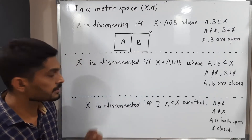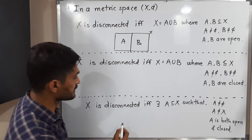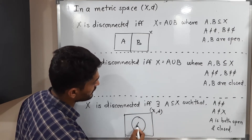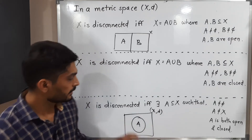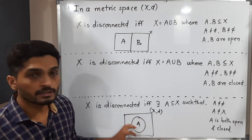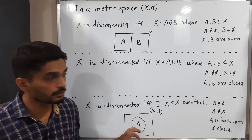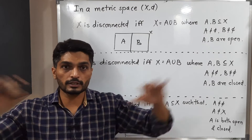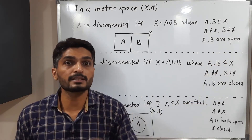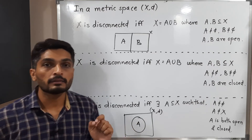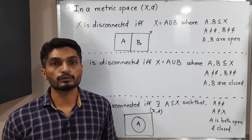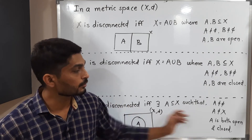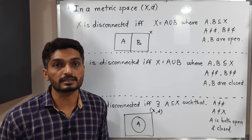The last equivalent definition is a little different. A metric space X is disconnected if it is possible to find a single set A which is a subset of X, not equal to phi, and not equal to X itself — that is, it is a proper non-empty subset — such that A is simultaneously both open and closed (clopen). If such a set exists, we declare that metric space X is disconnected.